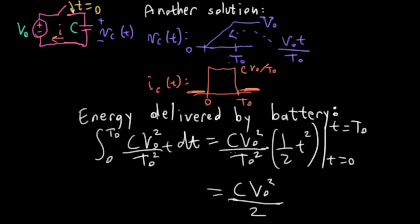When I plug in the T0 here for T, then the T0s cancel. So, I wind up with C, V0 squared over 2. So, this time, compared to the previous examples that we've done, we have half of the energy delivered to the battery, which matches the energy that winds up in the capacitor. So, there's another solution.